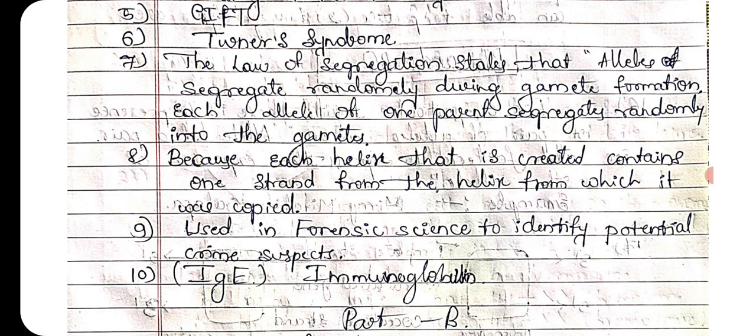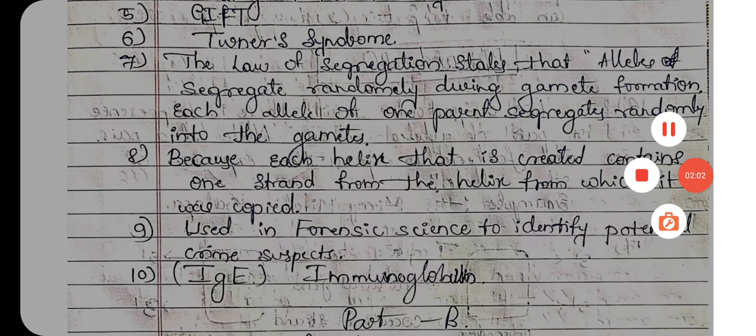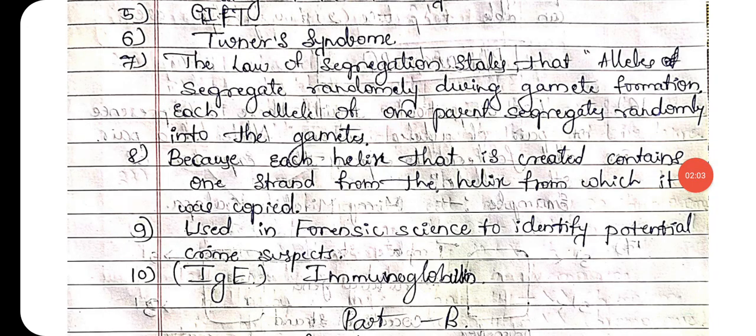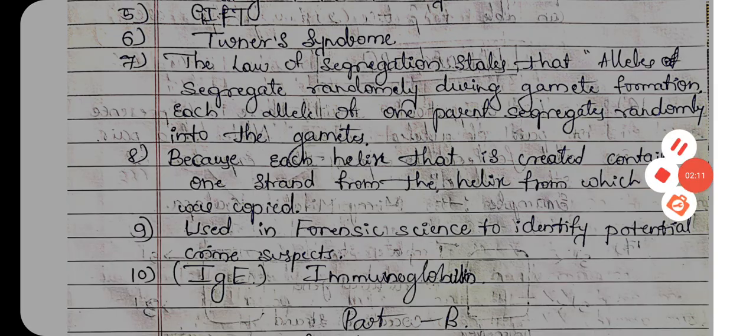Seventh one: the law of segregation states that alleles segregate randomly during gamete formation — each allele of one parent separates randomly into the gamete. Eighth one: why is DNA replication called a semi-conservative method? Because each new helix contains one original strand from the helix from which it was copied. Ninth one: give the application of DNA fingerprinting — it is used in forensic science to identify potential crime suspects.